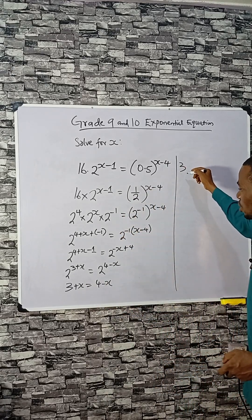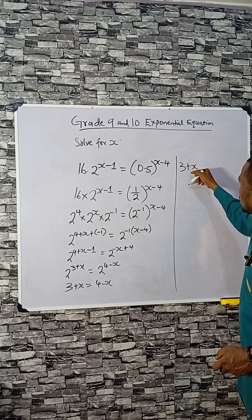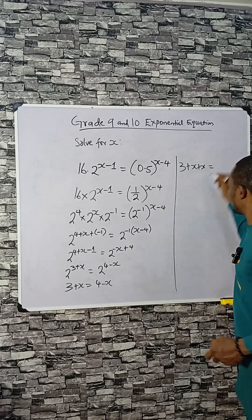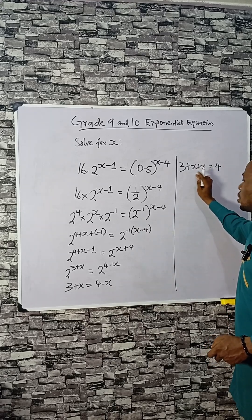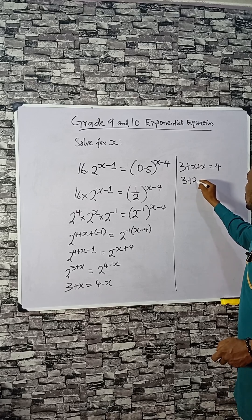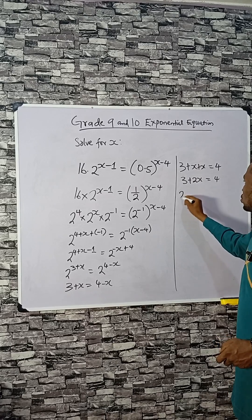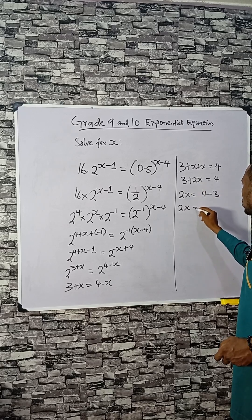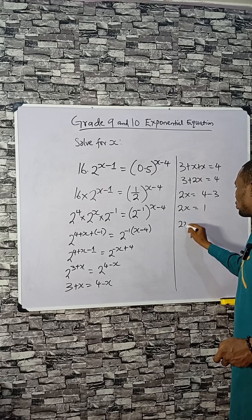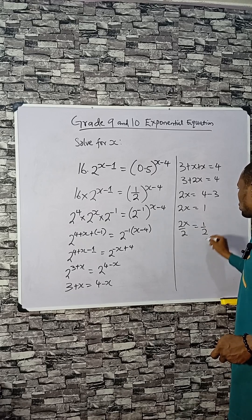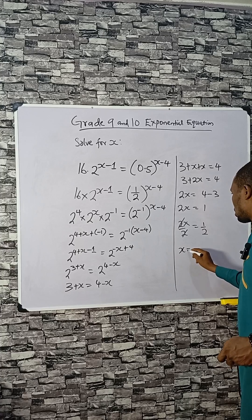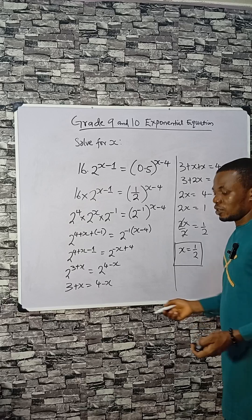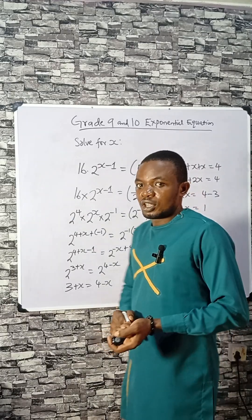Solving for x: x plus x gives 2x, which equals 4 minus 3. So 2x equals 1. Dividing both sides by 2, x equals one half. That is the answer. If you like this, share and follow us for more.